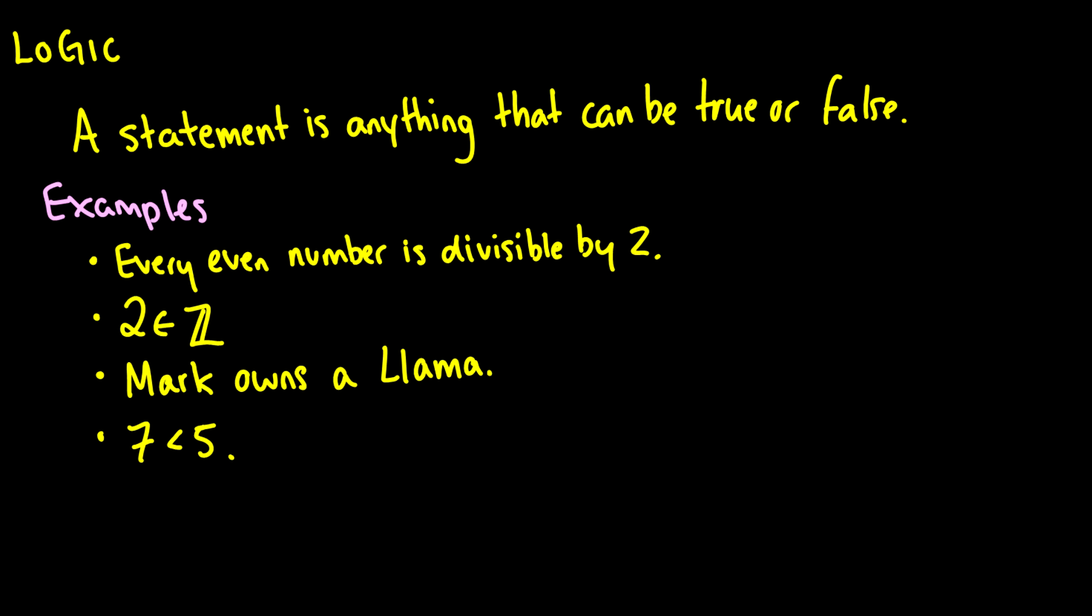So, an example. Every even number is divisible by 2. This is a statement because it is true. We know it to be true. What about 2 is in the set of integers? Well, we know this is true as well, because 2 is an integer.